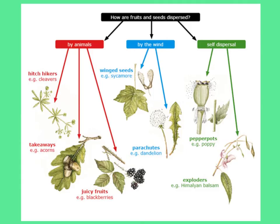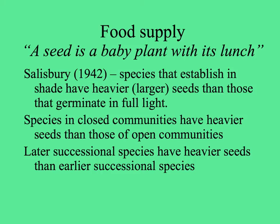Seeds and fruits can be dispersed either by animals — biotic means — by the wind, or by the plant itself. Here are some informal but descriptive names: hitchhikers, for example the bed straw, where fruits have little hooks on them. Takeaways are things that animals would carry away and disperse the seeds. Winged seeds and parachutes is what they call pogonocores here. Self-dispersal pepper pots, like the poppy, where the fruit shakes in the wind and seeds pop out. And exploders, like the balocores — the balsam or touch-me-not.